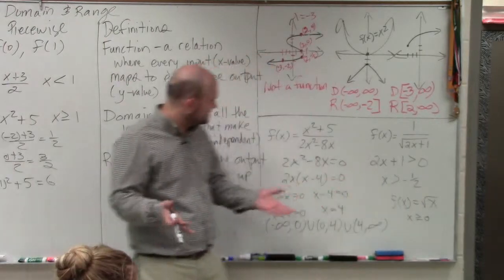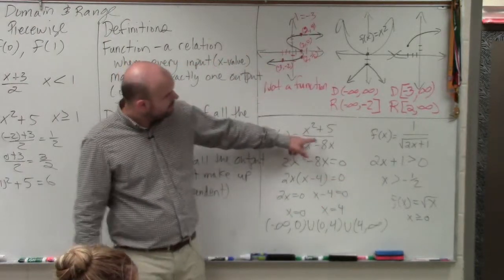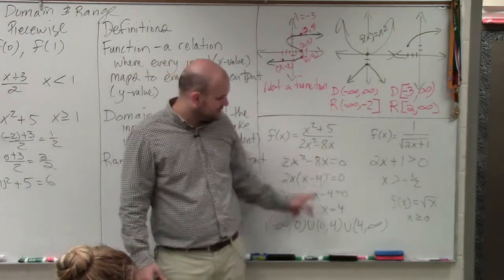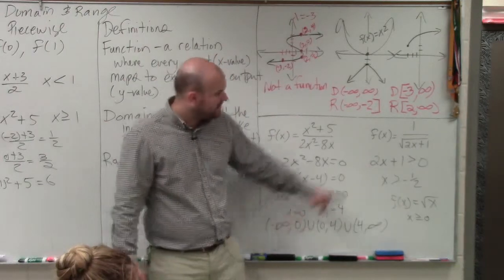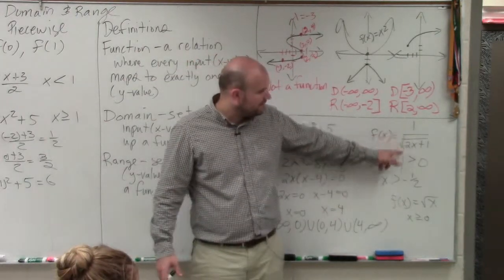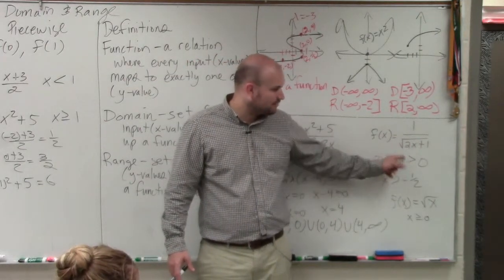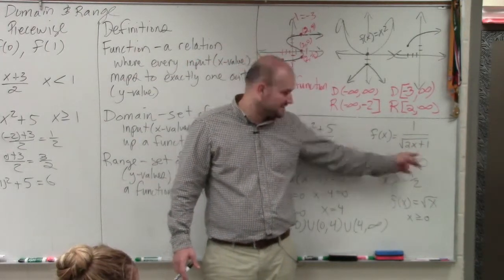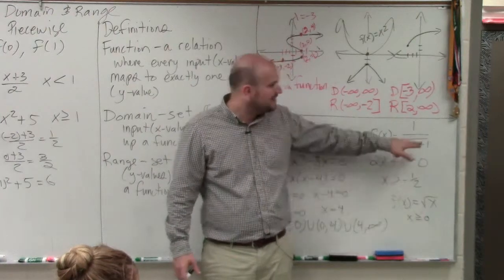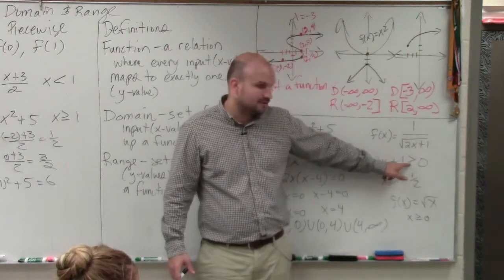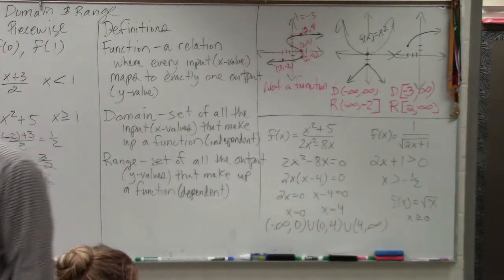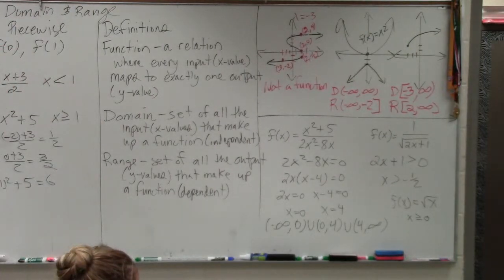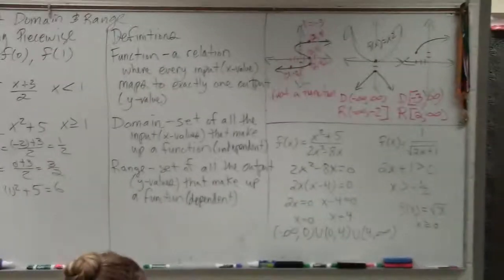Basically, the difference is: for a rational equation, you set it equal to 0 and solve — those are the values it can't be. For a radical, you set it greater than or equal to 0 and solve. Except when it's in the denominator, it can only be greater than, not greater than or equal to. Anybody have any other questions with that?